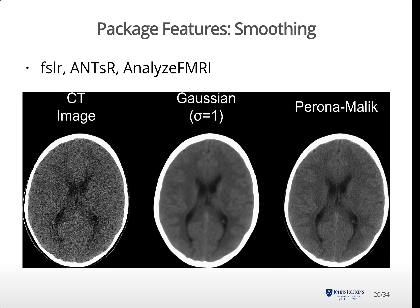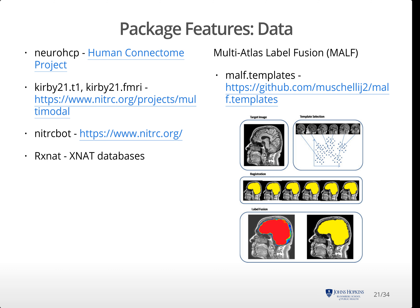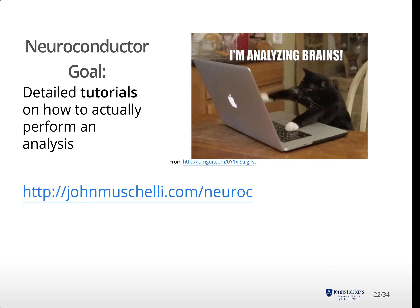One big hurdle is getting access to data, especially example data for testing. The NeuroHCP package can access data from the Human Connectome Project. The Kirby 21 dataset has scan-rescan data for different MRI sequences. NITRC has datasets that can be downloaded by the NITRC bot package. The RxNAT package can also interface with XNAT databases. Multi-atlas label fusion is a powerful approach for estimating regions of interest by registering and averaging multiple templates and atlases. We show an example of label fusion for brain segmentation. With these example data, we create tutorials and workflows to train researchers and demonstrate in detail how packages interact and can be used in practice.